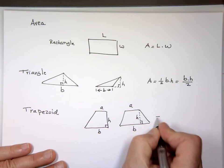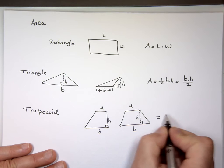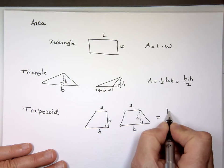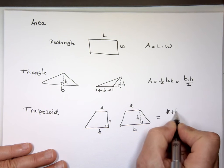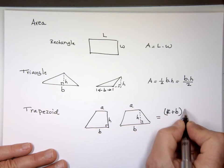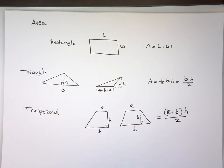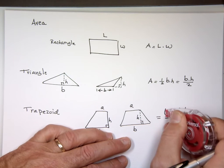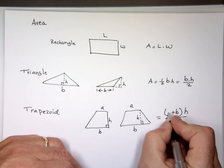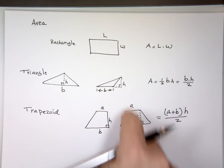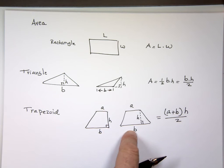So the area of that is A plus B times the height divided by two. You add this side to that side, multiply by the height, and divide by two.